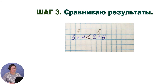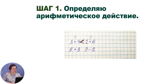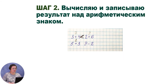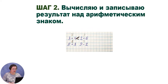Отступаем клетку вниз, записываем следующий пример: 5 плюс 3, клетку пропускаем и пишем вторую часть — 9 минус 2. Будьте внимательны: в левой части действие сложения, а в правой — вычитание. Первый шаг выполнили. Второй шаг — вычисляем. Сумма чисел 5 и 3 — состав числа 8, записываем карандашом над знаком «плюс». 9 составлено из 2 и 7, значит результат 7 — пишем над знаком «минус».